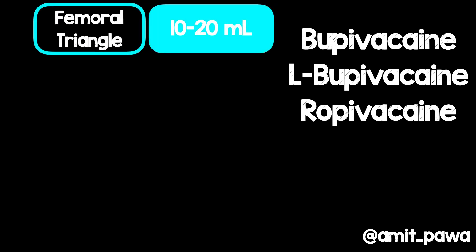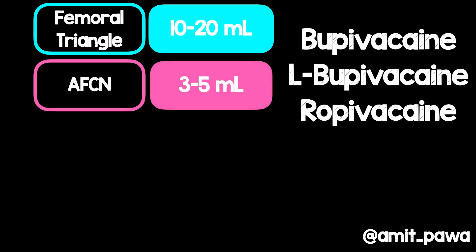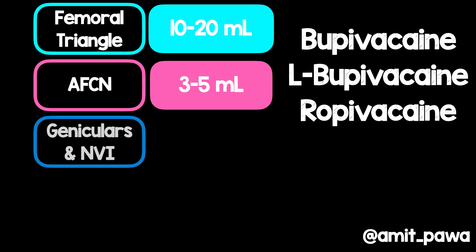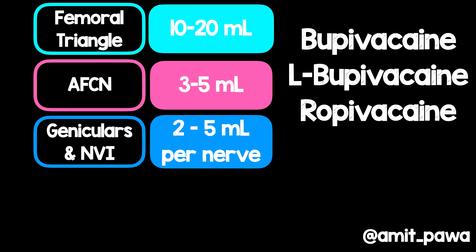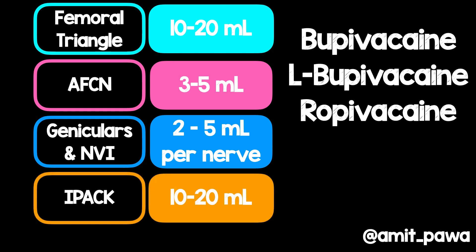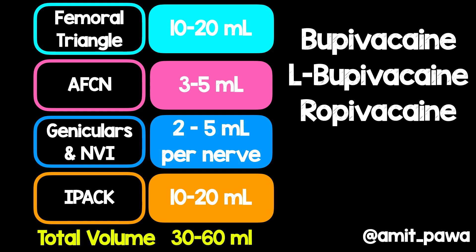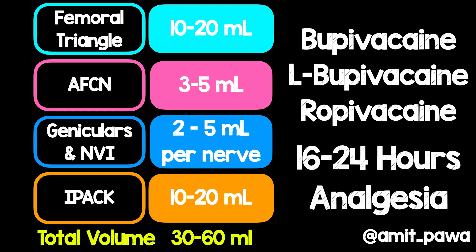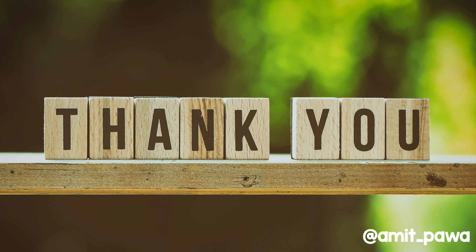For medication options, we use long-acting local anesthetics throughout. For the femoral triangle: 10–20 mL. For the anterior femoral cutaneous nerves: 3–5 mL. For the geniculars: 2–5 mL per nerve. For the IPAC block: 10–20 mL. Total volume ranges from 30–60 mL, aiming for up to 24 hours of analgesia — sometimes longer. It's important to use multimodal analgesia to maximize effect. Thank you very much for listening; I hope you found that useful.